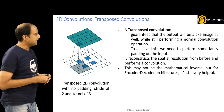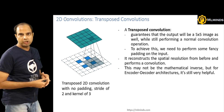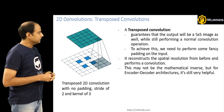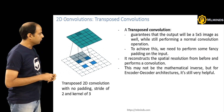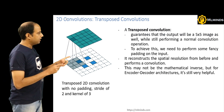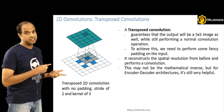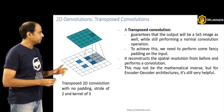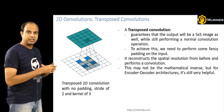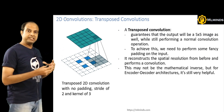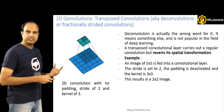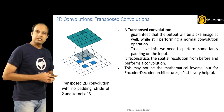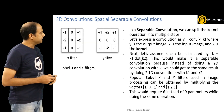A transposed convolution guarantees that the output will be a 5×5 image while still performing a normal convolution operation. To achieve this we need to perform some fancy padding, which is what you see here. It reconstructs the spatial resolution from before and performs a convolution. This may not be the mathematical inverse, but for encoder-decoder architectures it is very important. That's about transposed convolutions.